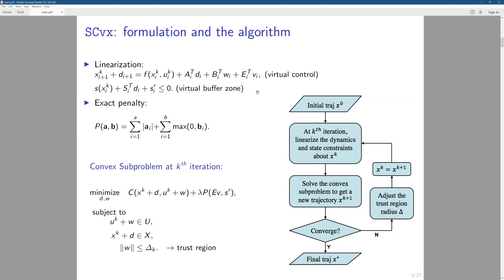This virtual control term here ensures that the entire system is controllable with a special construction of this E-matrix. And we also have linearized the S inequalities with the addition of this virtual buffer zone term. And we have penalized these two terms into the cost function by using this exact penalty function. So you can see that we are eventually solving a convex sub-problem at each iteration. We check if it's converged. If it's not, we will adjust the trust region radius. That's the essence of the SCvx algorithm.